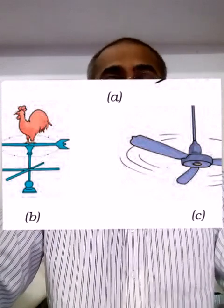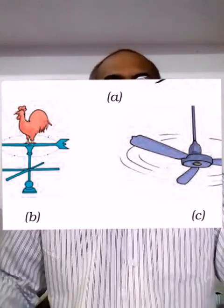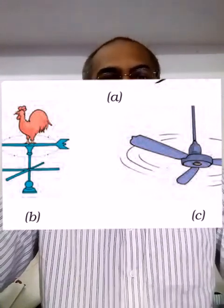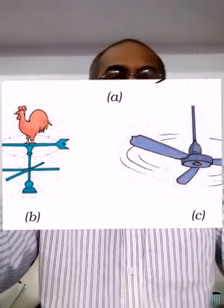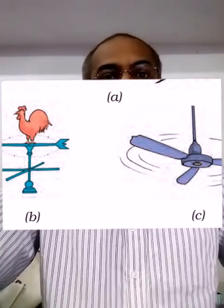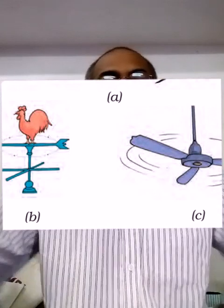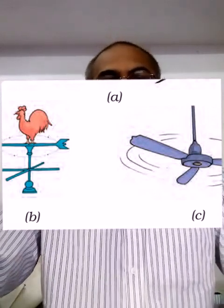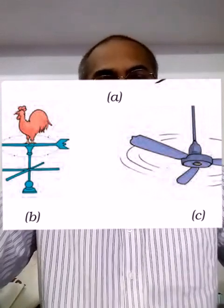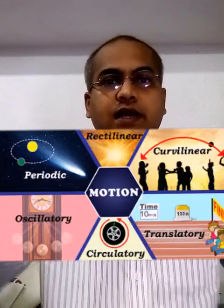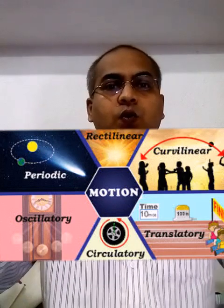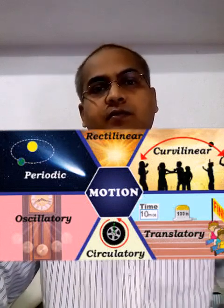When a body moves, it covers a distance, and this distance we can find out by measurement. We have already discussed a lot about how to measure length. By measuring this length, we understand that something has moved from one place to another. This is how motion and measurement are related — without measurement, we can only observe that something is moving, but to know how much distance it covers, we need measurement.